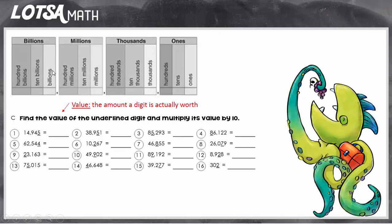So let's look at the directions more closely. It says find the value, or the amount the digit is actually worth. So find the value of the underlined digit.